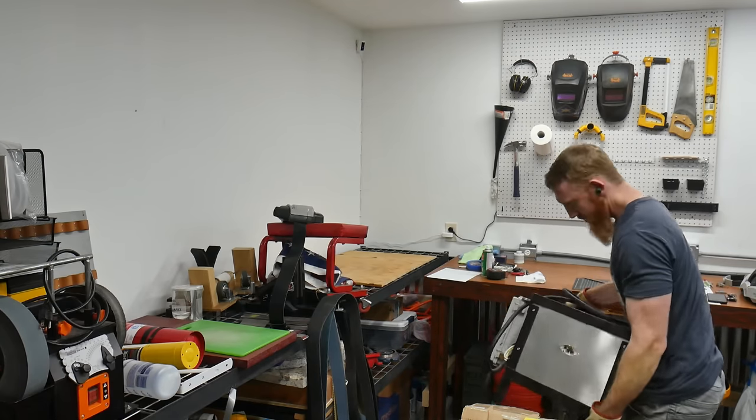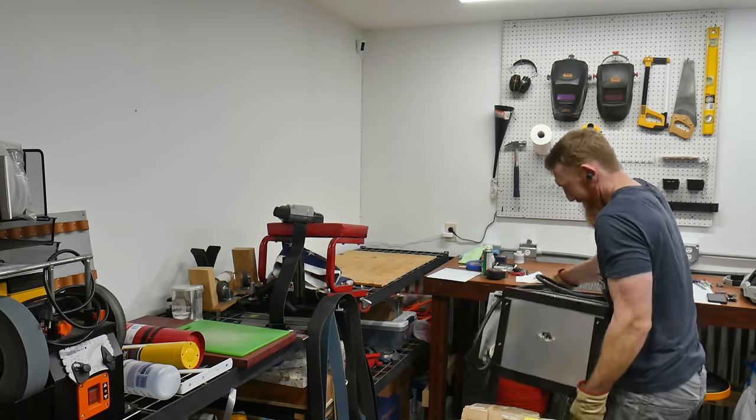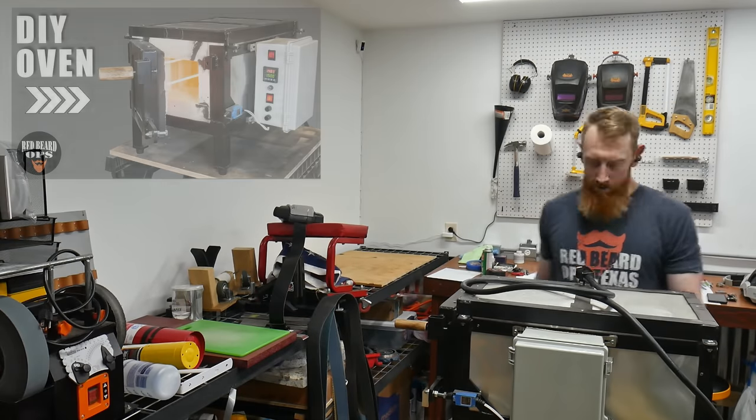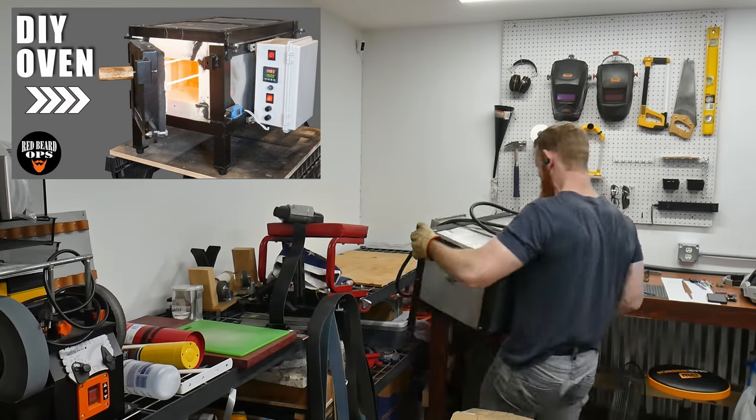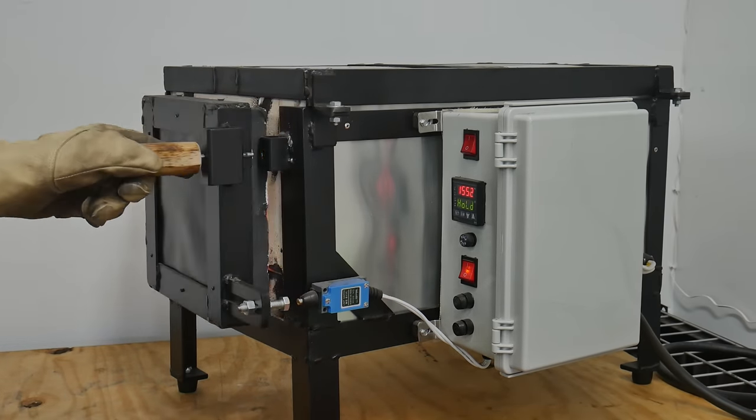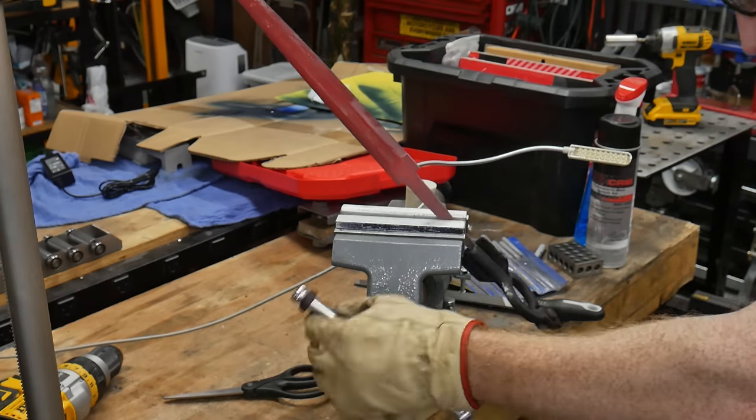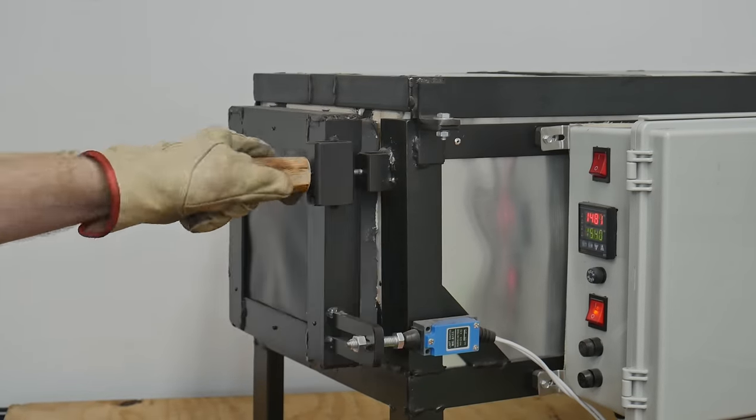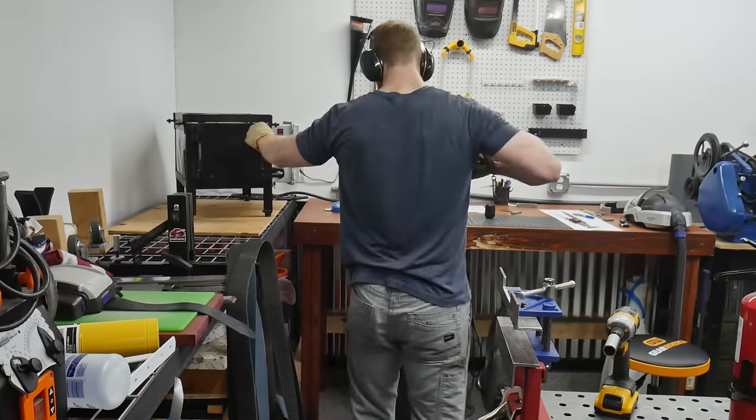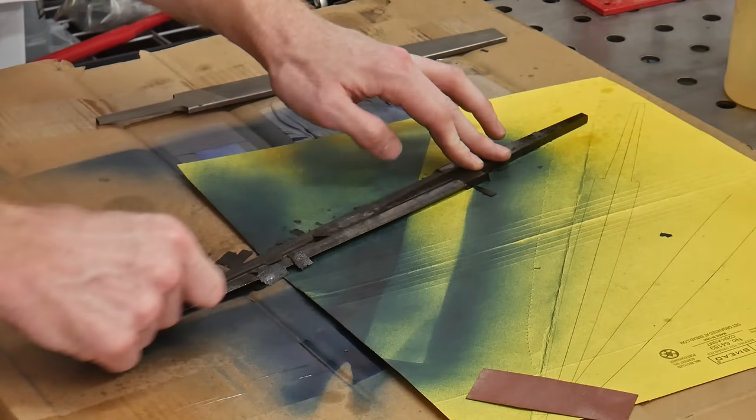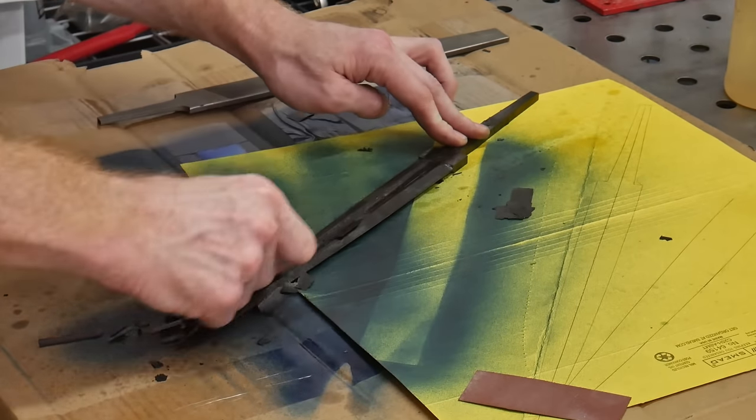To harden this blade, I'll be using my DIY heat treating oven. I built this oven a while back and have a full video tutorial posted on how I did it if you're interested. The steel I'm working with came annealed from the vendor and I'm just going to be running some normalization cycles before quenching. I did one at 1600, one at 1550, and then I quenched at 1500 in the Parks 50.